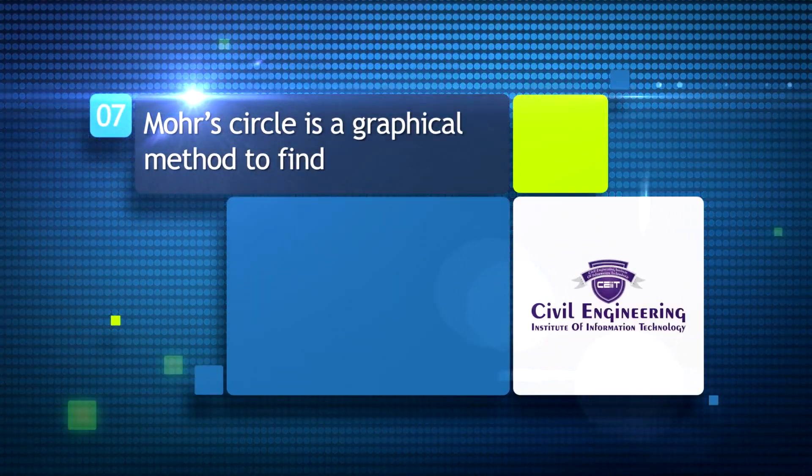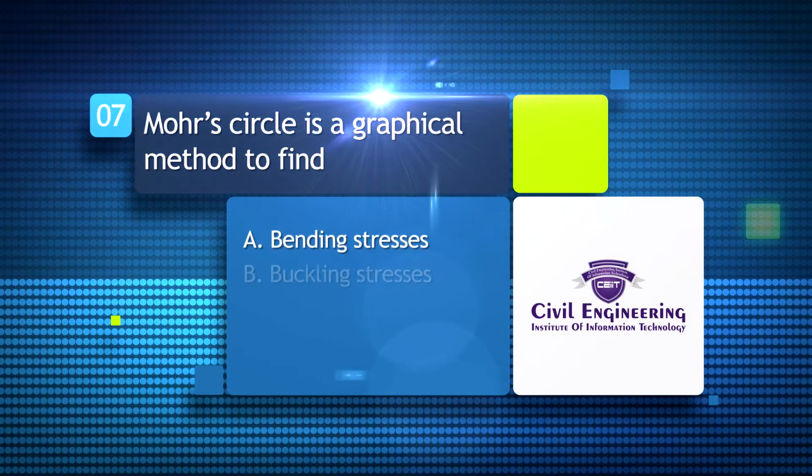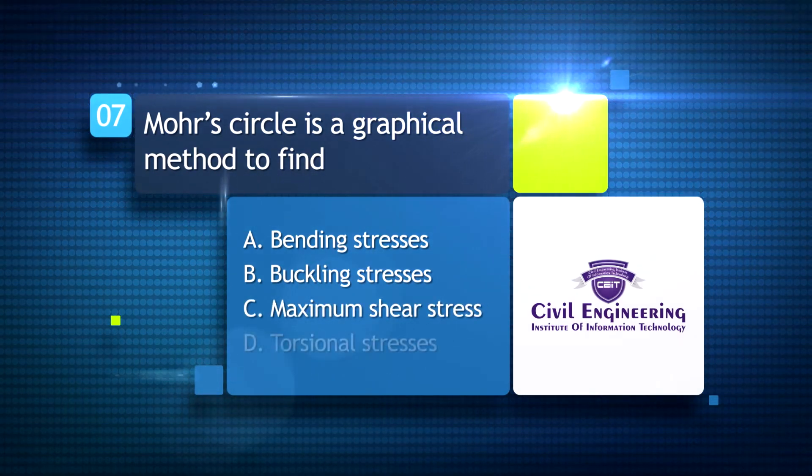Mohr's circle is a graphical method to find: A. bending stresses, B. buckling stresses, C. maximum shear stress, D. torsional stresses.